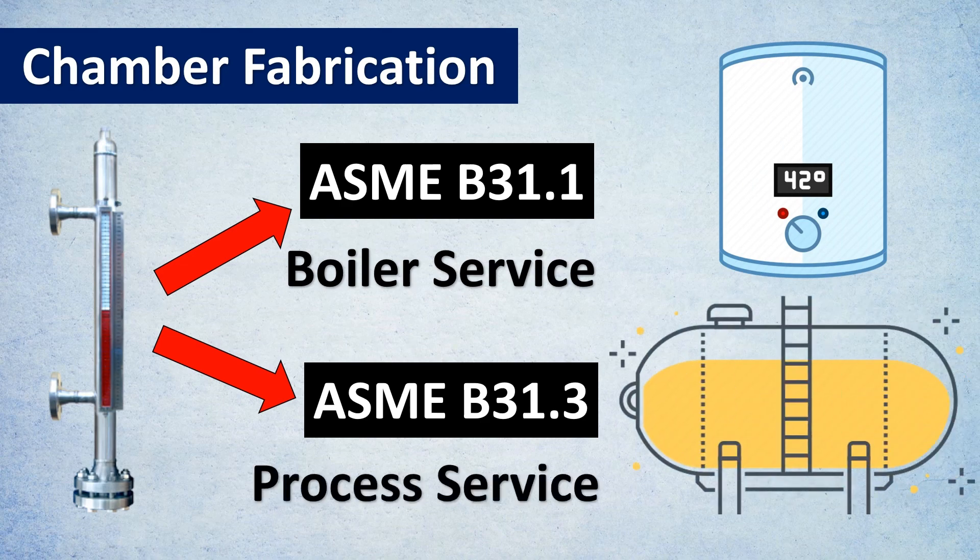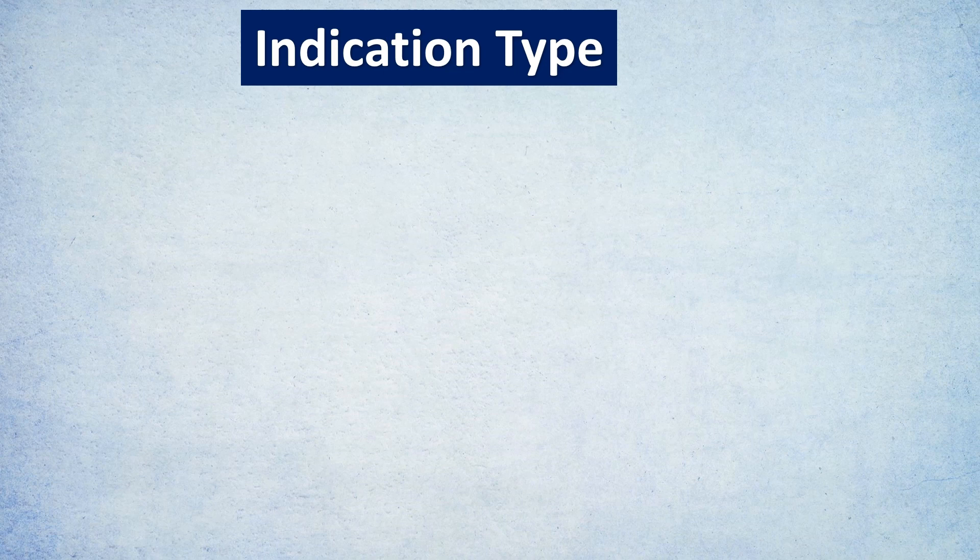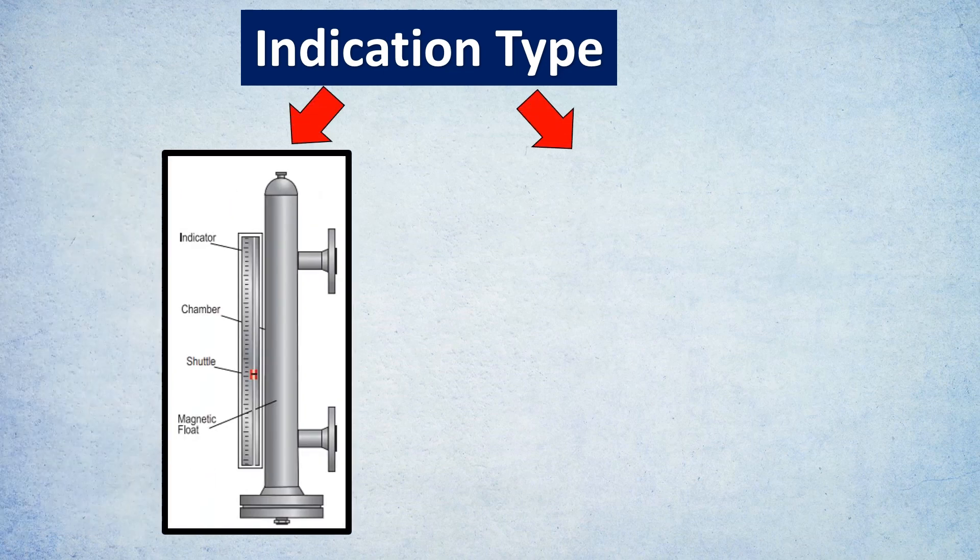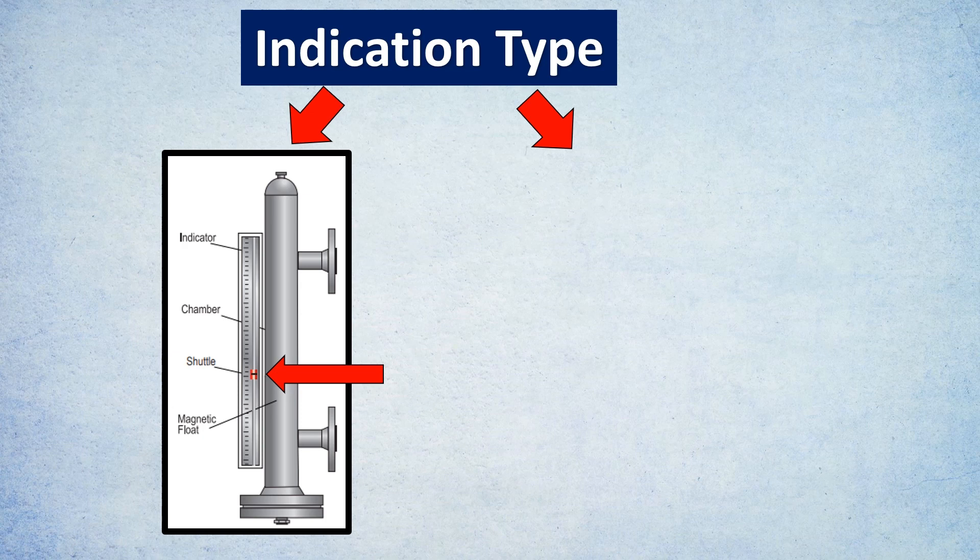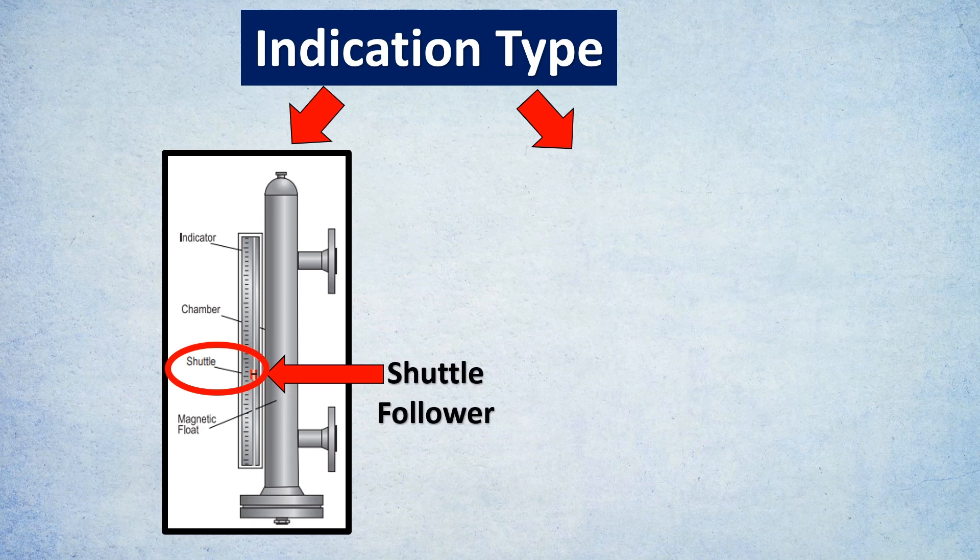The next thing is the indication type, which is also very important. Two most common ones: first is the shuttle type. If you see here, this is the small shuttle which keeps changing its position as per the level. It keeps following the magnet, so it's magnetically coupled to the float. This is called a shuttle follower method of indication.